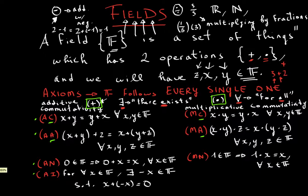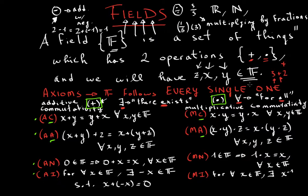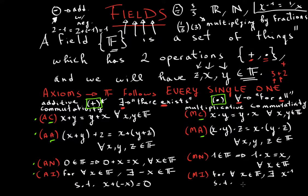And lastly — I know you can guess this — we will have a multiplicative inverse. For all x existing in the field, there exists an x-inverse (which is one over x) in the field, such that x times x-inverse will give you your neutral element for multiplication, which is one.